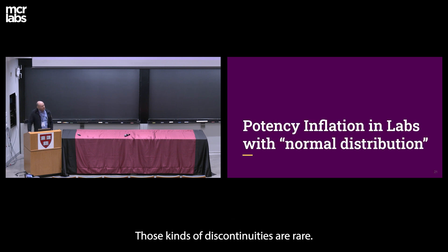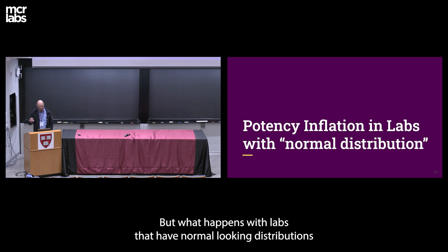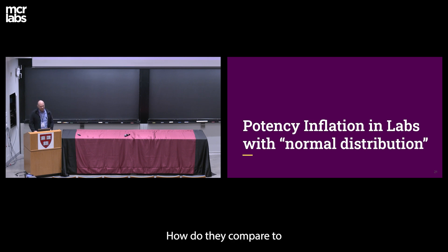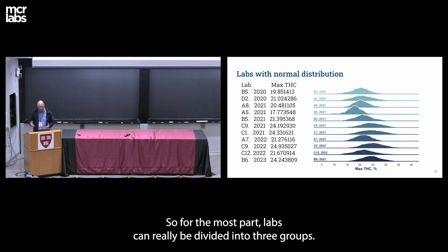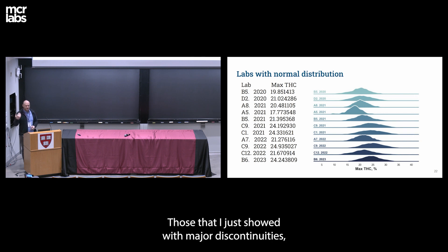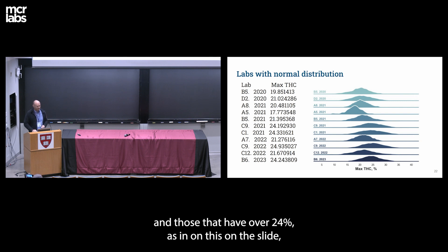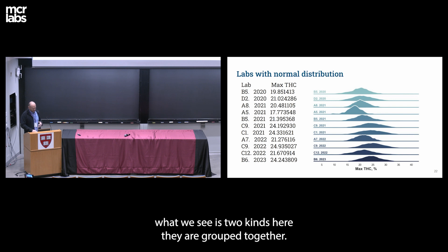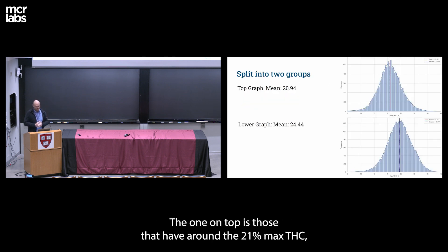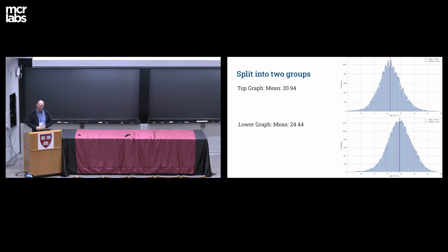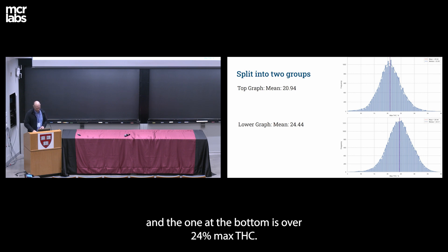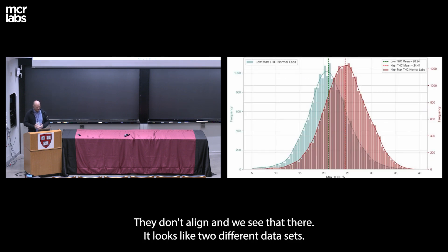Those kinds of discontinuities are rare — they appear in every state, but are rare within the data set. What about labs that have normal-looking distributions but are inflating potency? For the most part, labs divide into three groups: those with major discontinuities; those with an average max THC of around 19.5% to 21%; and those with over 24%. When you try to align the 21% group with the 24%+ group, they don't align — it looks like two different data sets.